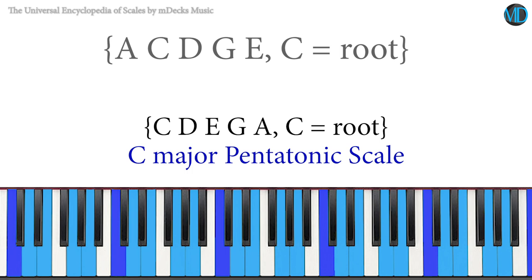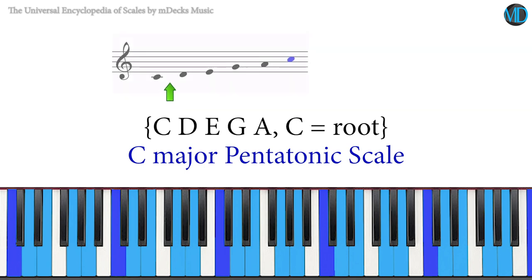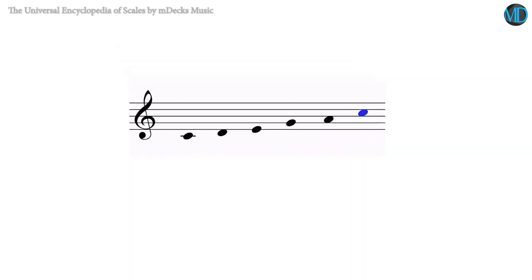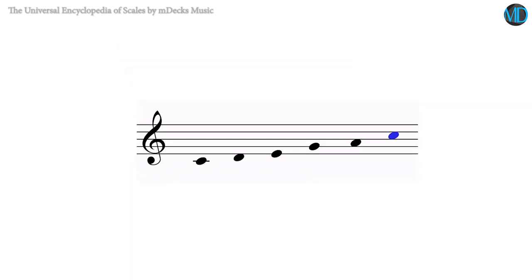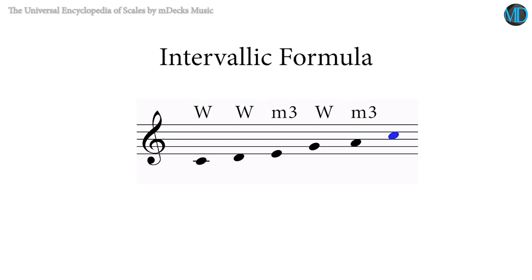That's how we usually sort the notes in a scale, which is a method we have used extensively in the encyclopedia. This sorting method will allow us to deduce an important property of a scale, which is its intervallic formula. The intervallic formula is a string of characters created by showing the intervals between two consecutive notes in a scale when they are sorted using the aforementioned criteria.